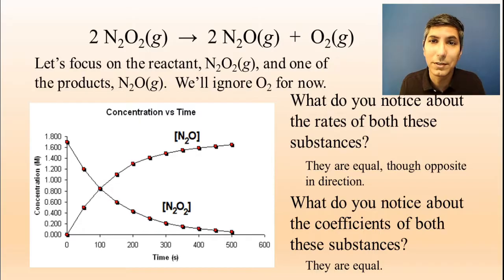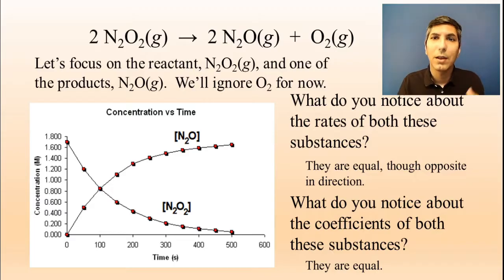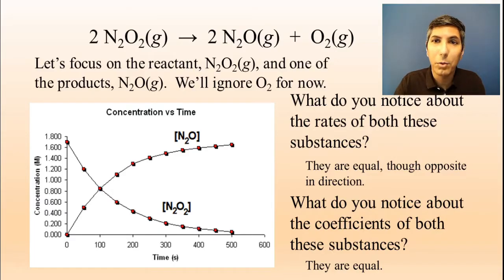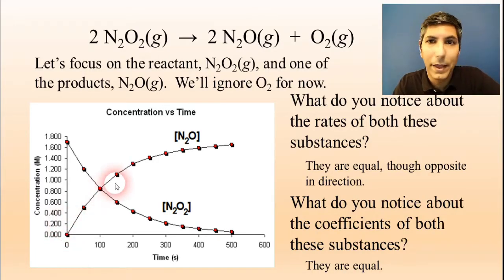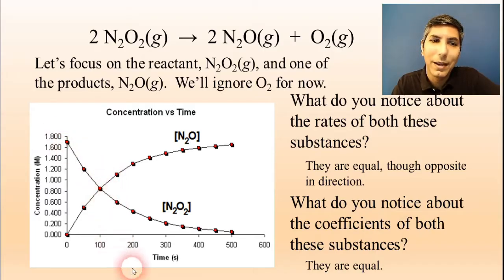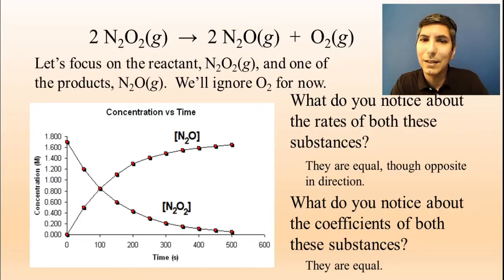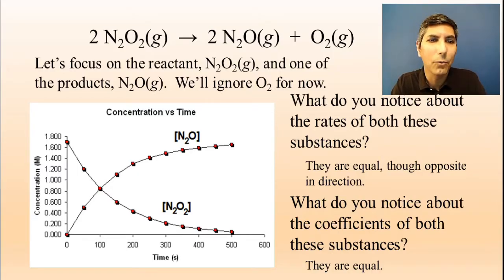Whenever you have substances in a balanced equation that have the same coefficient, they're going to have the same rate of reaction. The only difference is: if it's a product, it's going to go up at that rate, and if it's a reactant, it's going to go down at that same rate. So the balanced equation can tell us something about the relative rates of reaction.